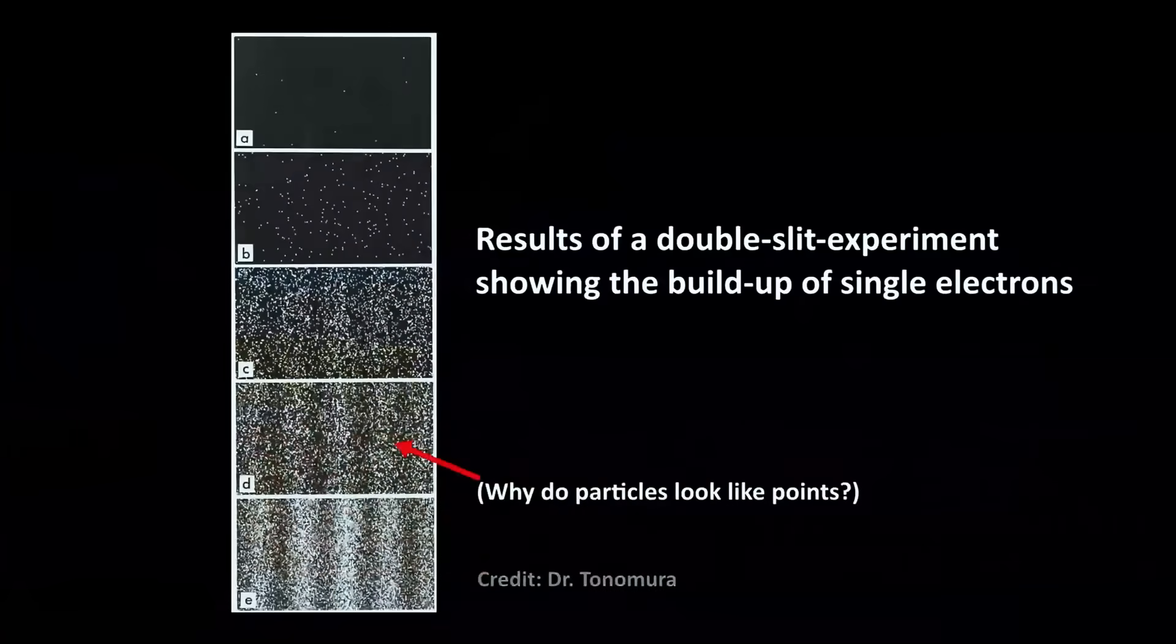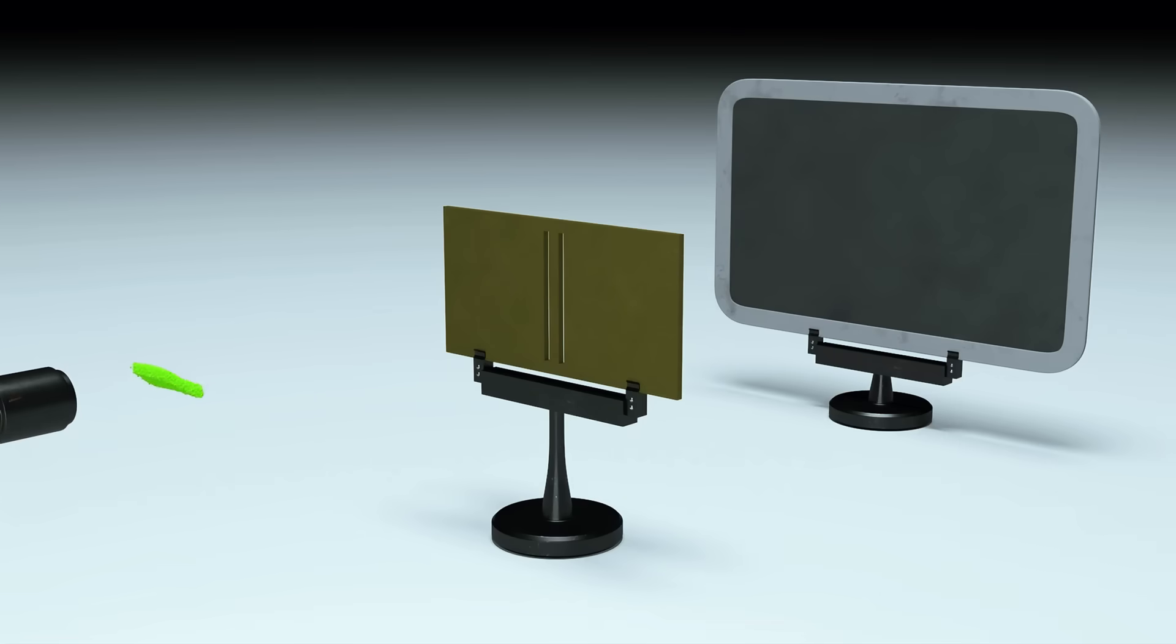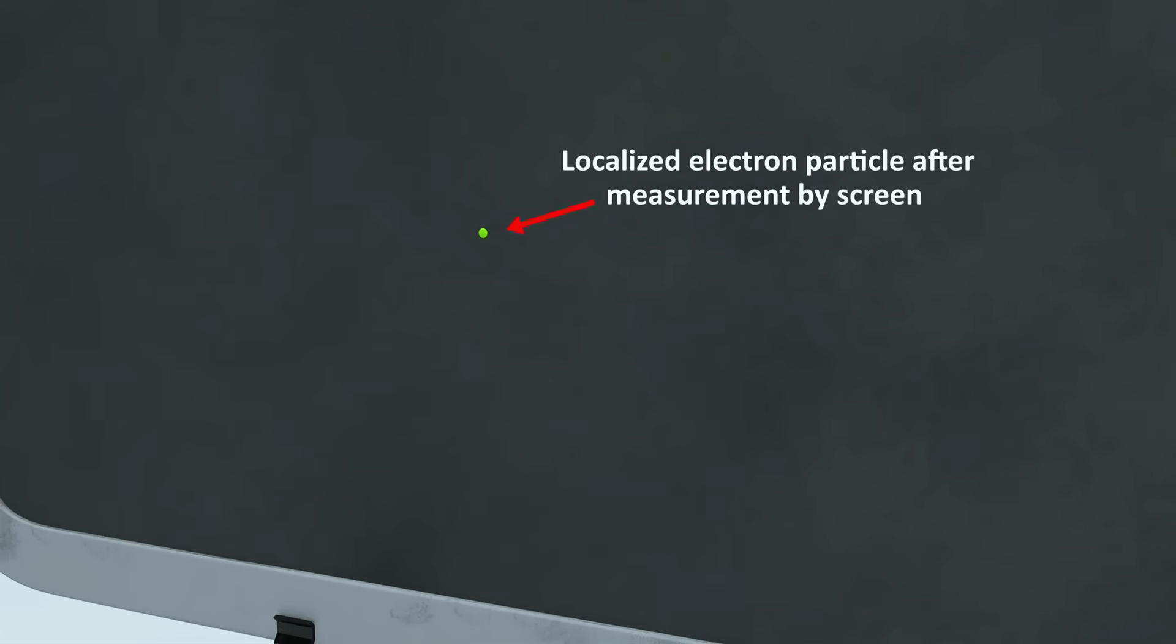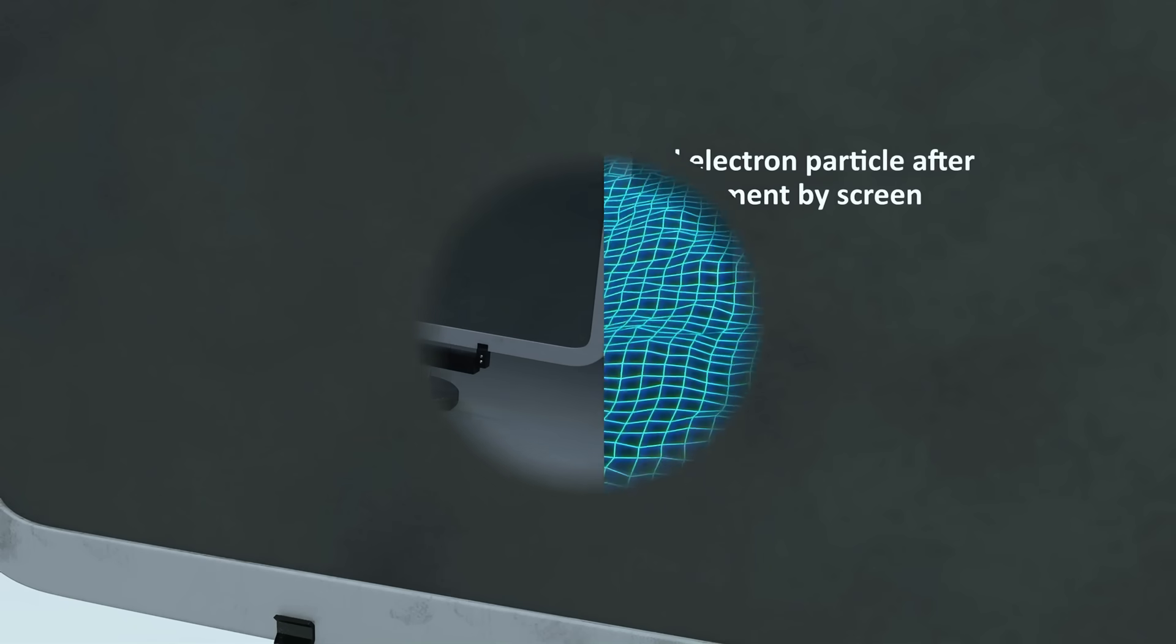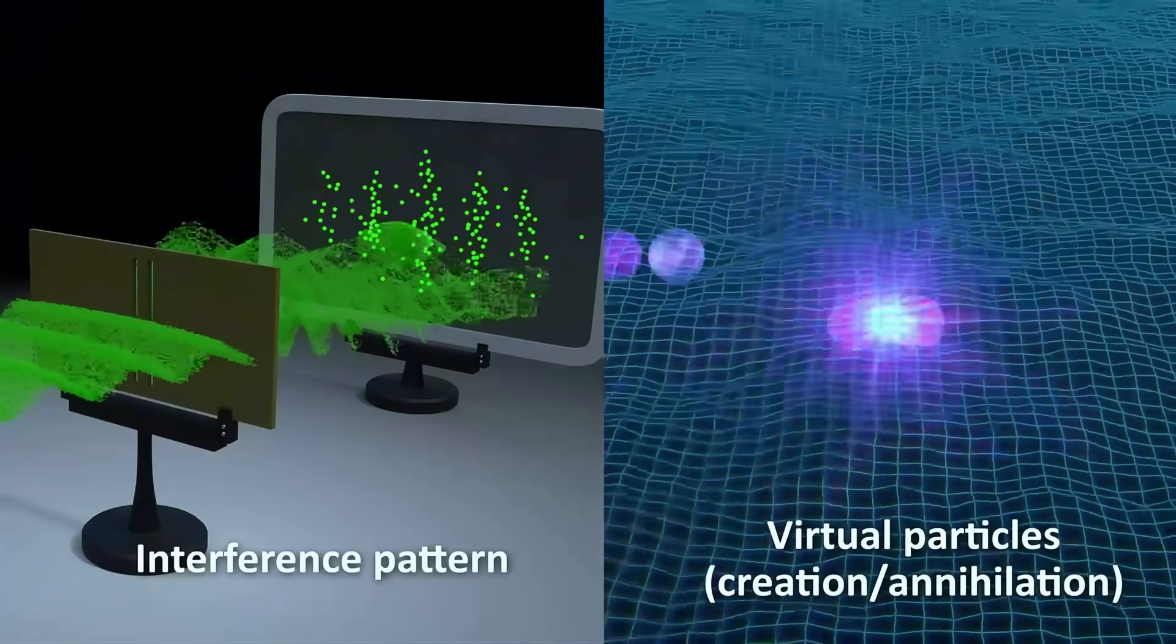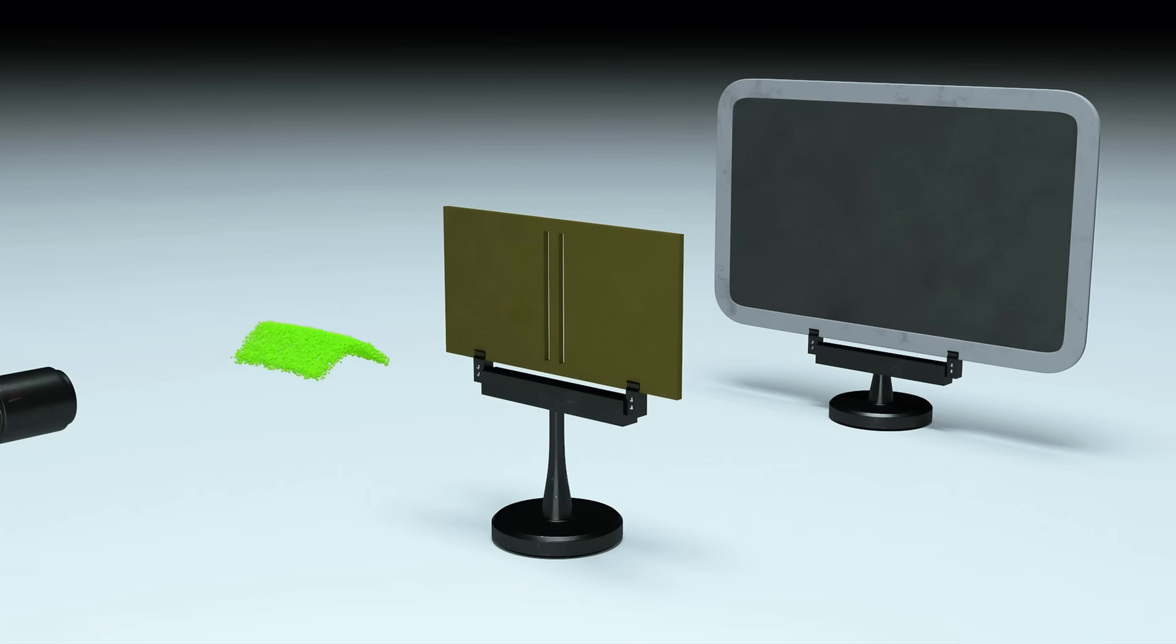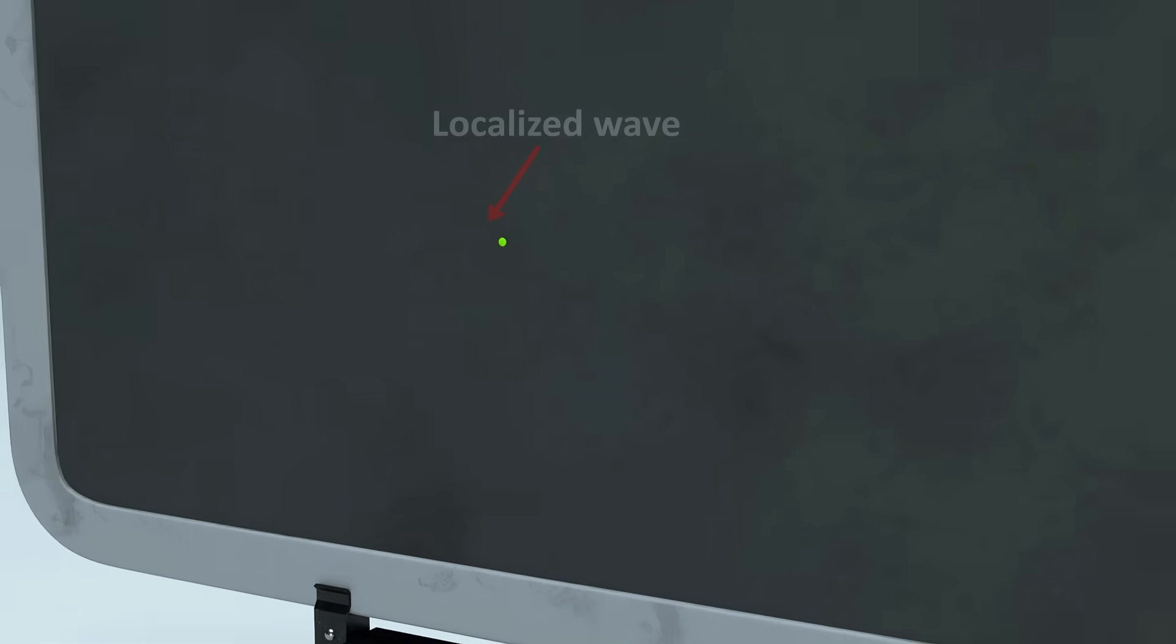You might ask, if everything is really a field, why do particles look like points? The answer is because ripples can be localized, or concentrated in a small region, so they behave like points in many experiments. But the field picture naturally explains interference and creation annihilation processes, which are experimentally proven behaviors of these quantum objects. So the points we see are still waves, but just highly localized waves that appear like points to us in the macro scale.